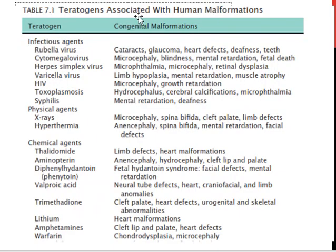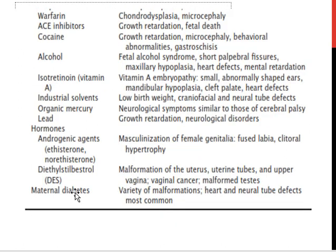Regarding teratogenicity associated with human malformation: rubella virus causes cataracts, glaucoma, heart defects, deafness, and dental defects. Cytomegalovirus causes microcephaly, blindness, mental retardation, and fetal death. Maternal diabetes is associated with a variety of malformations, with heart and neural tube defects being the most common. This concludes the birth defects Part 1 lecture.